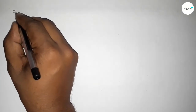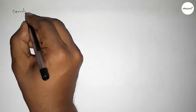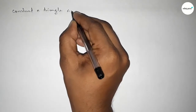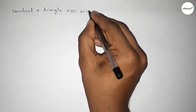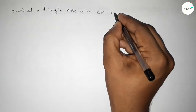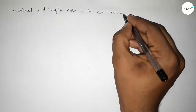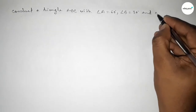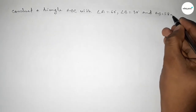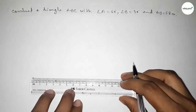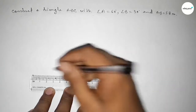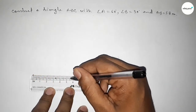Hi everyone, welcome to SISR Classes. Today in this video we have to construct a triangle ABC with given angle A equal to 60 degrees, angle B equal to 30 degrees, and given side AB equal to 5.8 centimeters. So let's start the video. First of all, we have to draw a line of 5.8 centimeters.